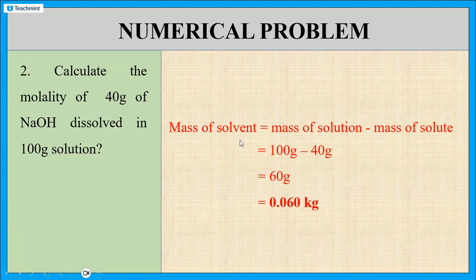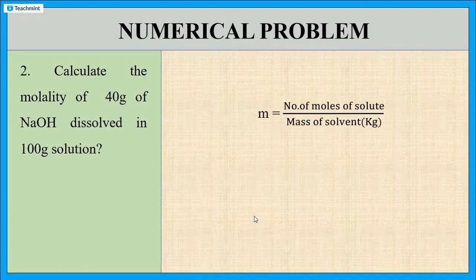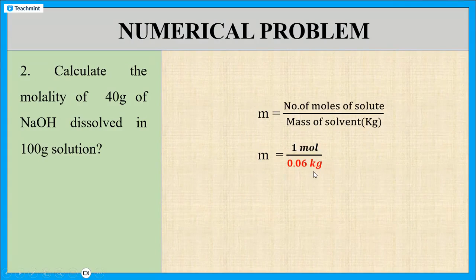Now we know the mass of solvent and the number of moles of sodium hydroxide. Substituting into the molality formula: m equals 1 mole divided by 0.06 kg, and the answer is 16.67 mole per kg, or 16.67 m.